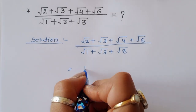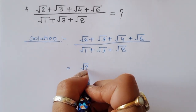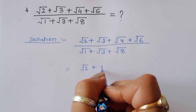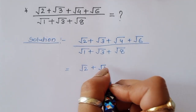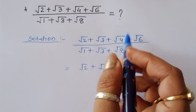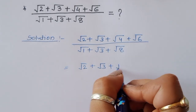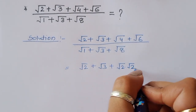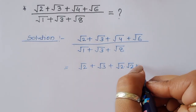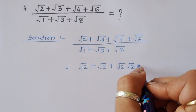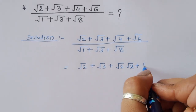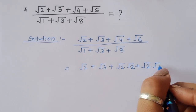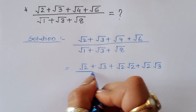So now, we can write square root of 2 plus square root of 3, then square root of 4 we can write as square root of 2 times square root of 2, and square root of 6 we can write as square root of 2 times square root of 3, all divided by the denominator.